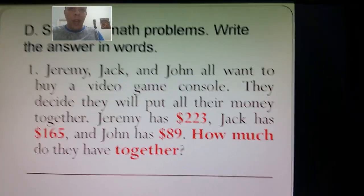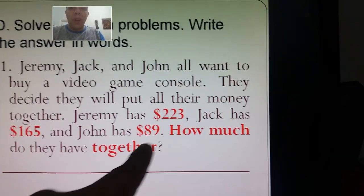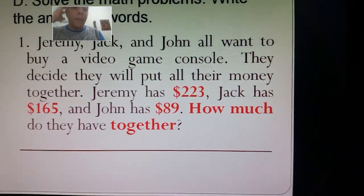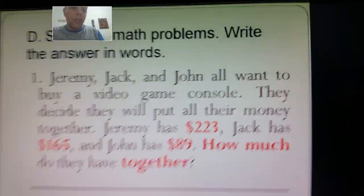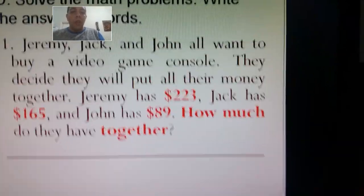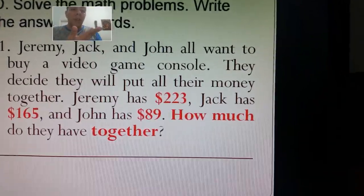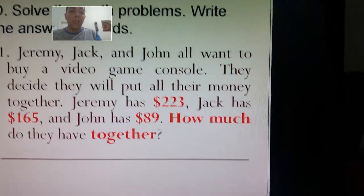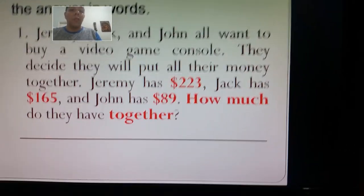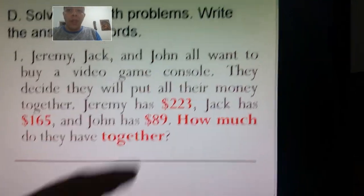So what do we have to do? How much money do Jeremy, Jack, and John have together to buy the video game console? Are they buying a Nintendo Switch, an Xbox, or a PlayStation? We need to know the total. So — addition, subtraction, multiplication, or division? Since we want to know how much money they have in total, we obviously need to do addition.